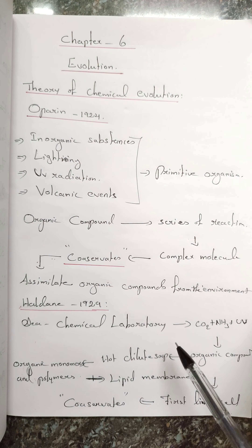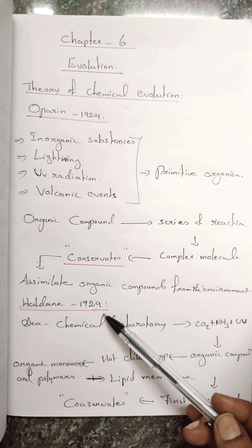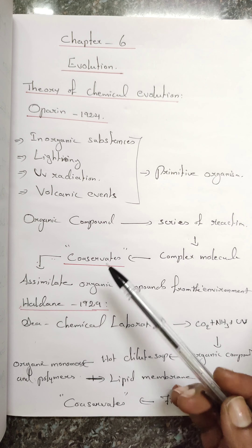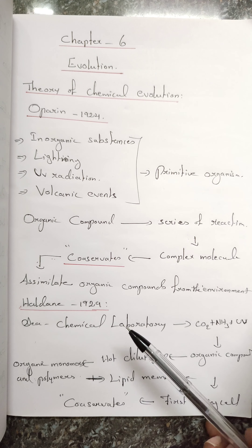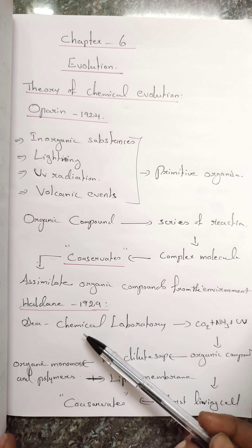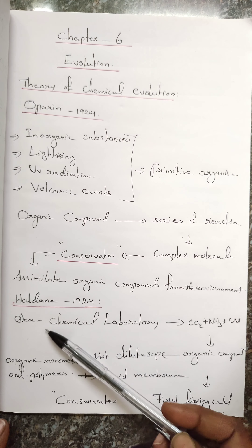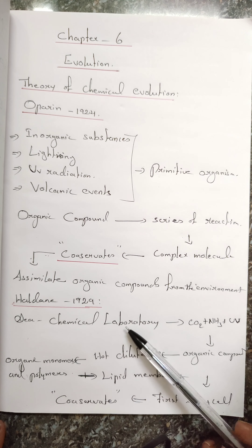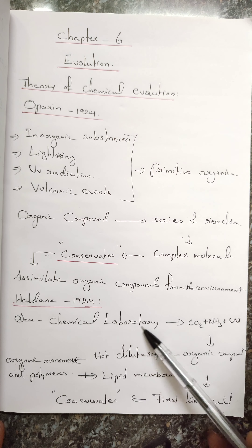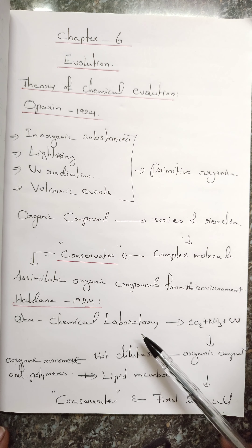The same concept was proposed by another person, Haldane, in 1929. Both persons worked independently, but their concept is the same — referred to as the Oparin-Haldane concept. Haldane said that the sea or ocean was a chemical laboratory because it consisted of many chemicals. The atmosphere at that time was oxygen-free, and what remained were carbon dioxide, ammonia, and UV rays.